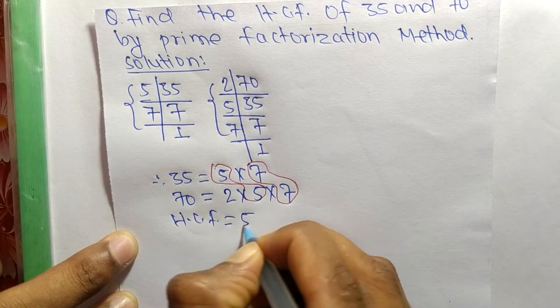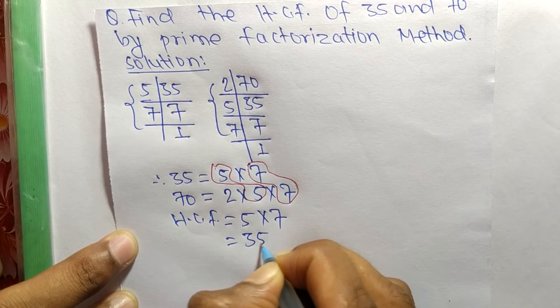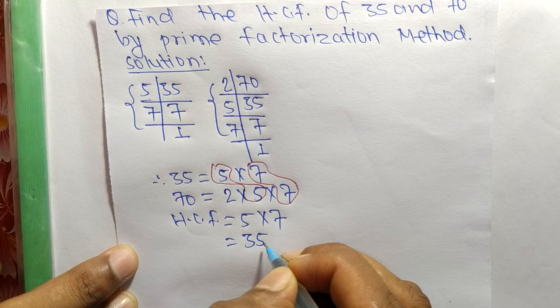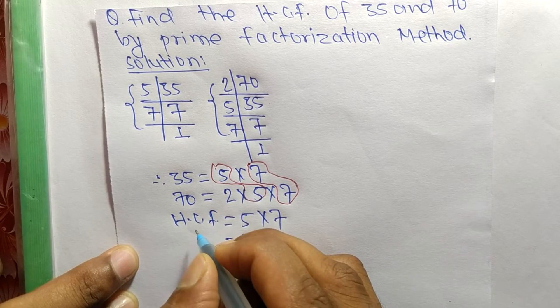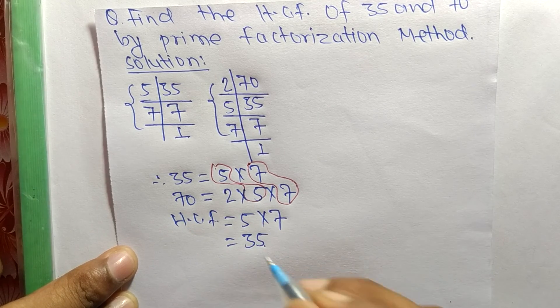5 times 7 equals 35, so 35 is the HCF of 35 and 70. So this much for today and thanks for watching.